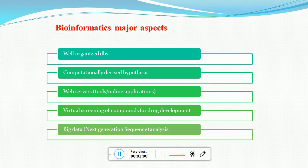Next is computationally derived hypotheses. Once we have raw data and a particular tool, we can hypothesize what output we will get after running that tool with that raw data. Next are web servers, which are tools or online applications used to analyze data from databases. Next is virtual screening of compounds for drug development — we can also do virtual screening of compounds.